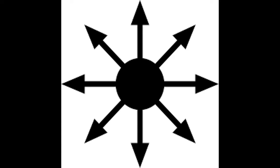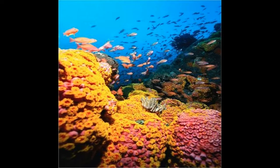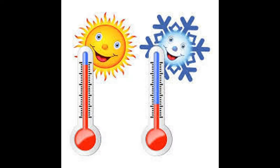Ocean heating is a very broad subject and affects most living things in the ocean. Coral are specifically affected by this subject. Minimal temperature changes, such as 1 degree Celsius, can cause coral to bleach.